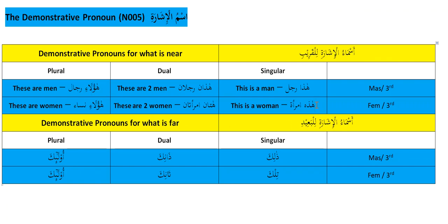If it's a female you're pointing to, you say 'hadhihi' instead of 'hadha.' For example, 'hadha hatifun' — this is a phone. But about the mouse I say 'hadhihi fa'ra' — 'fa'ra' means mouse, literally the little mouse that runs around in your kitchen and eats your cheese.